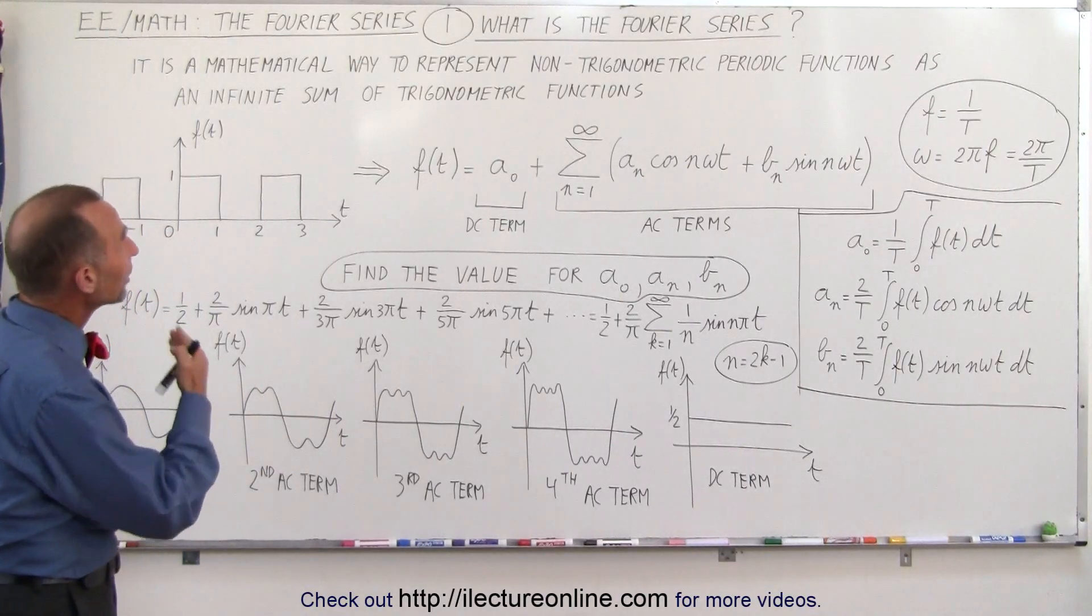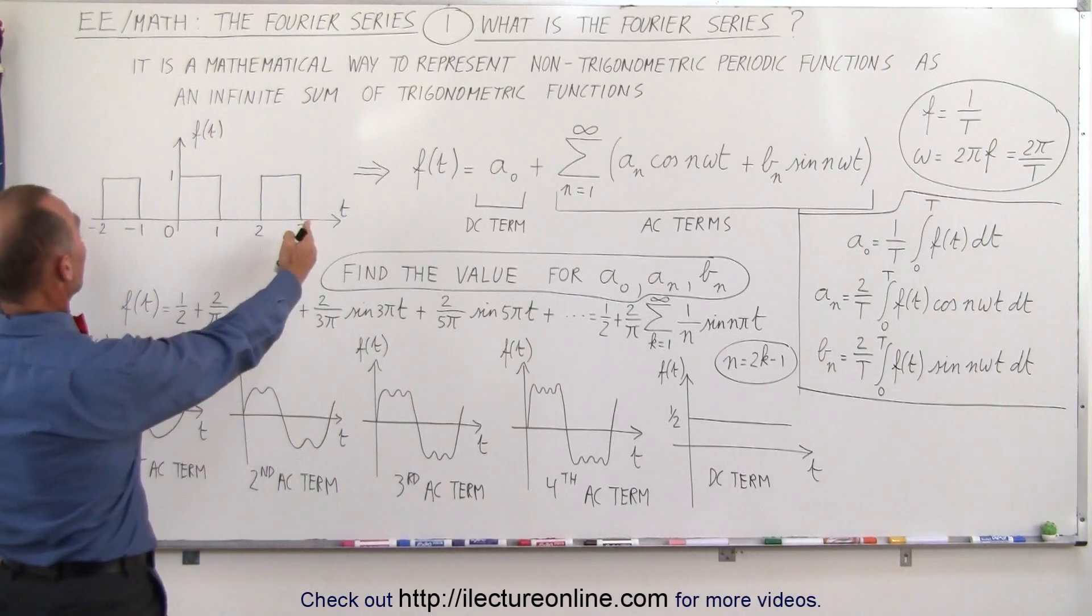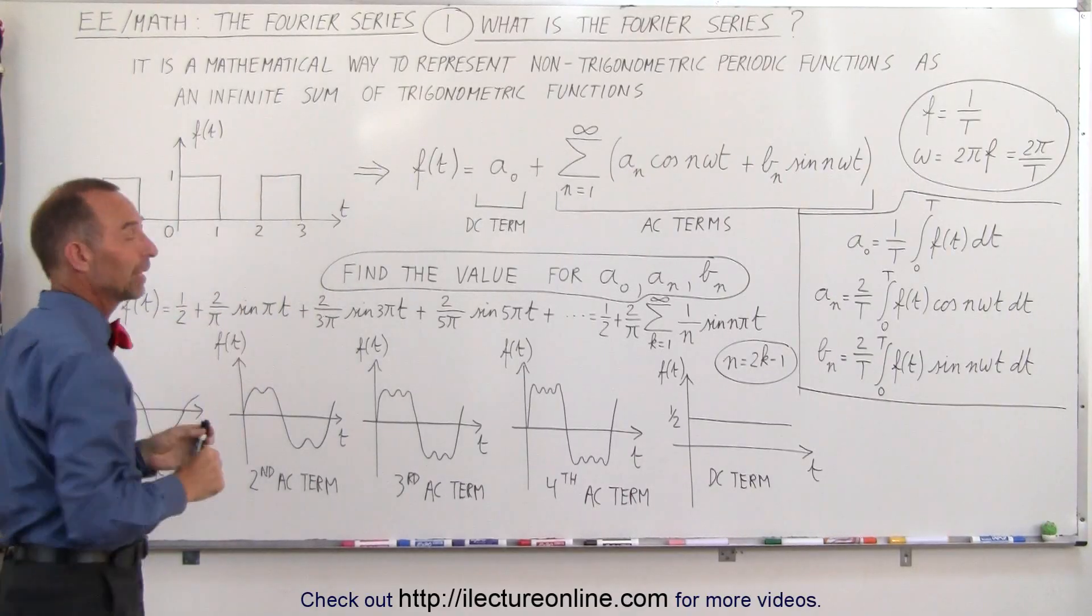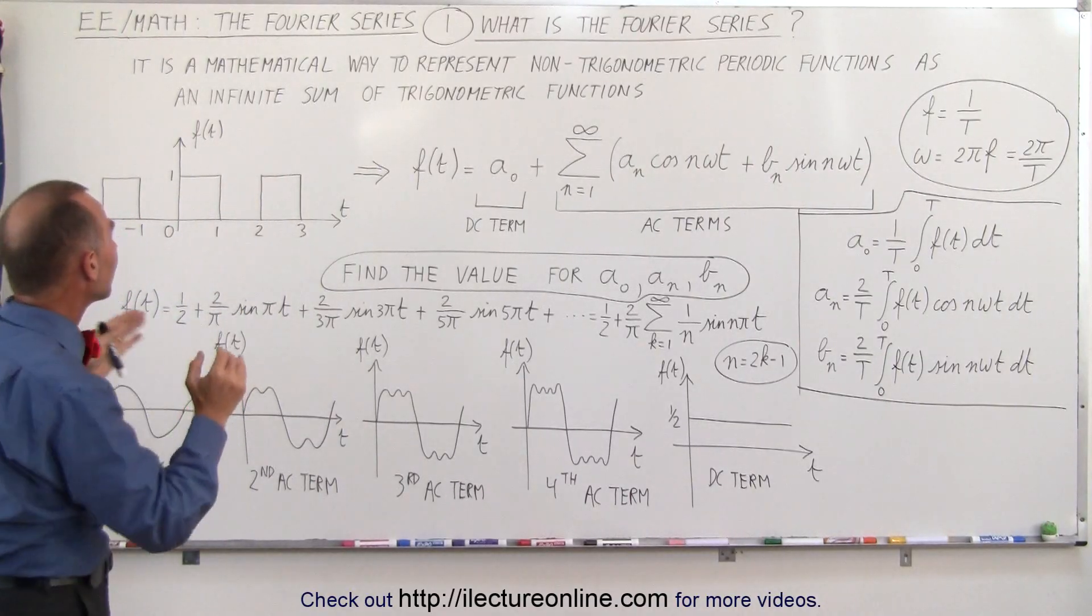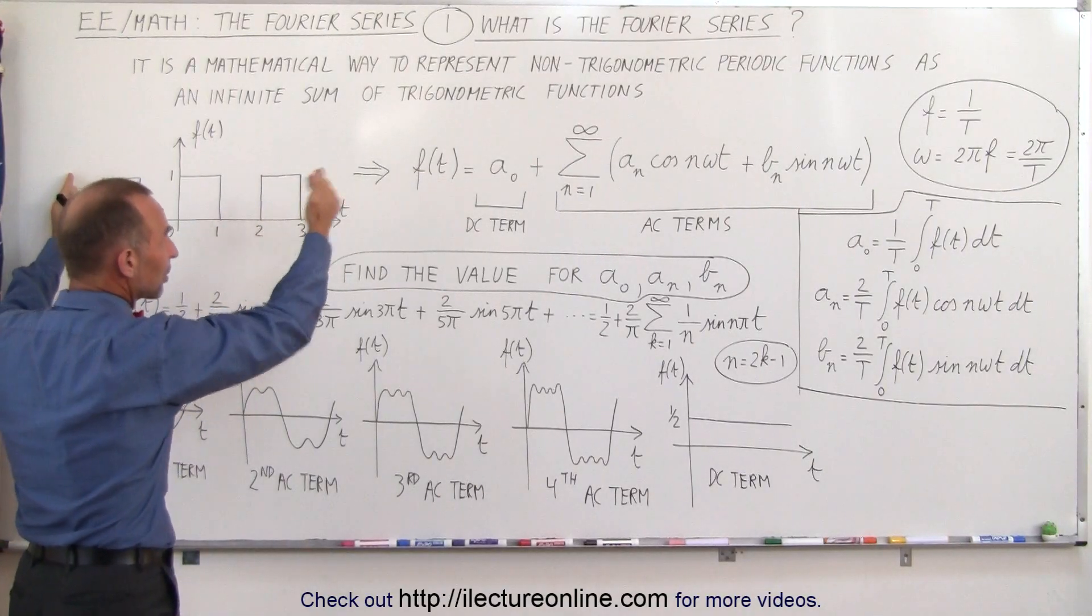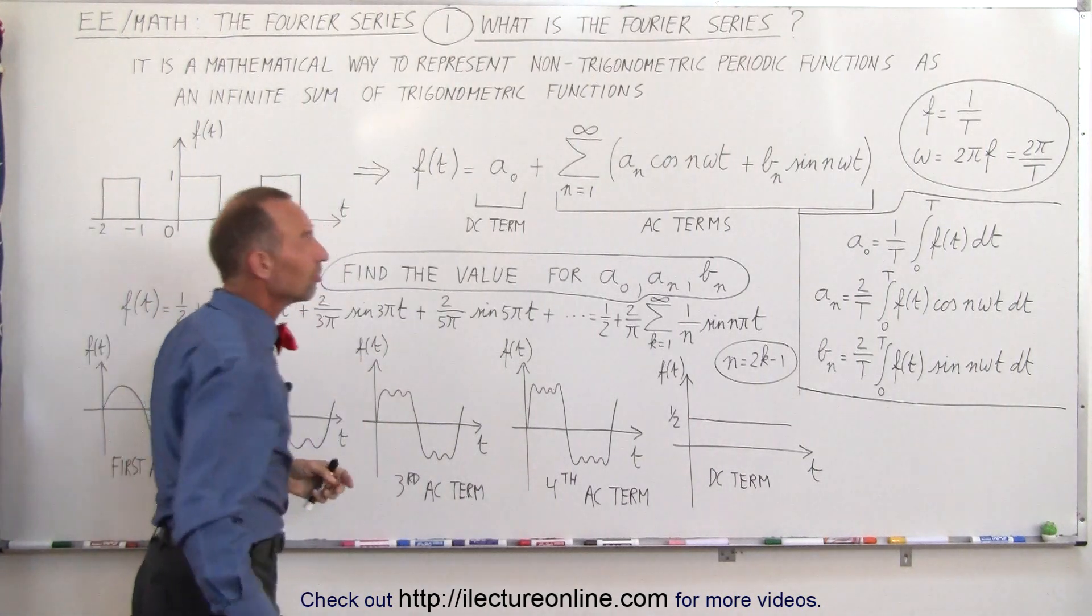It is a mathematical way to represent non-trigonometric periodic functions. Here's an example of a non-trigonometric periodic function, a square wave function. So Fourier series enables us to take a periodic function like this and write it as an infinite sum of trigonometric functions.